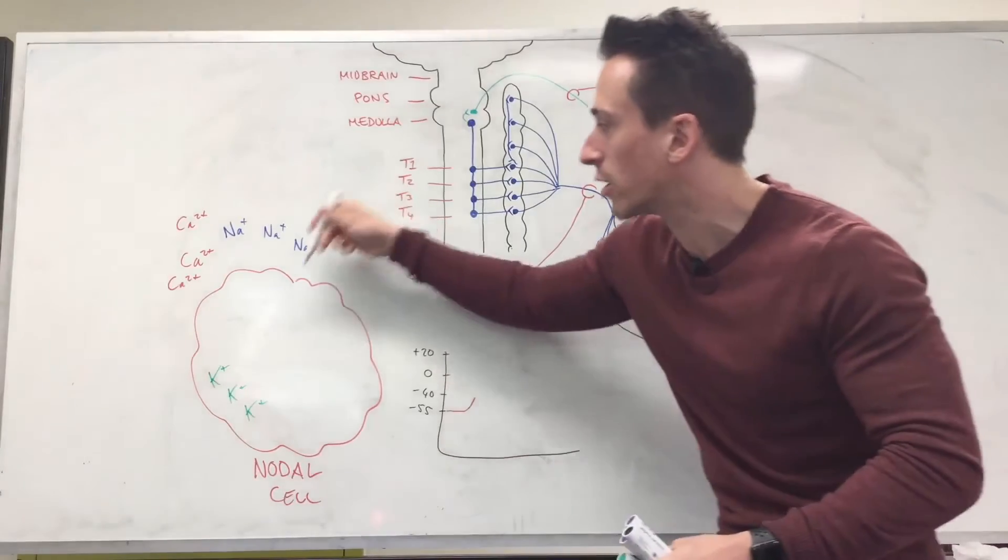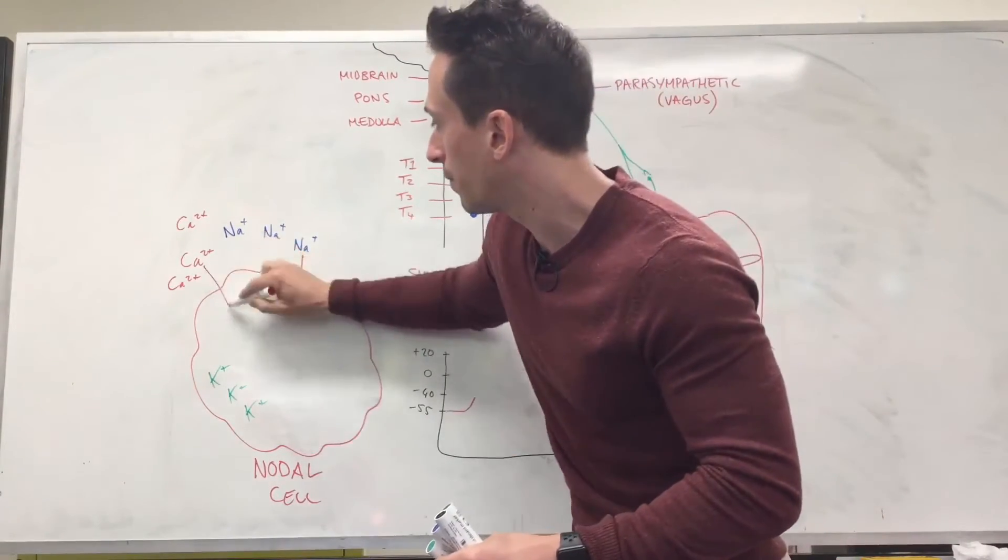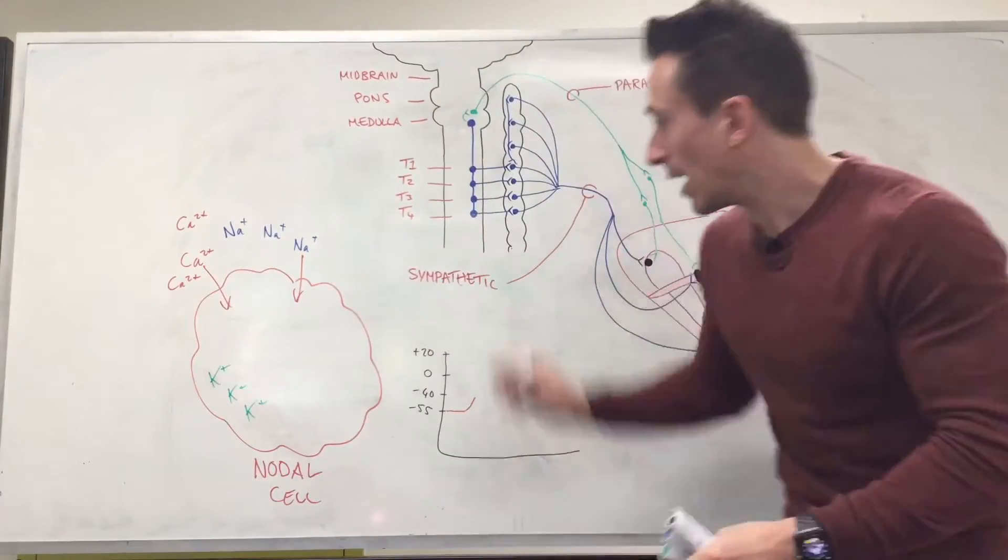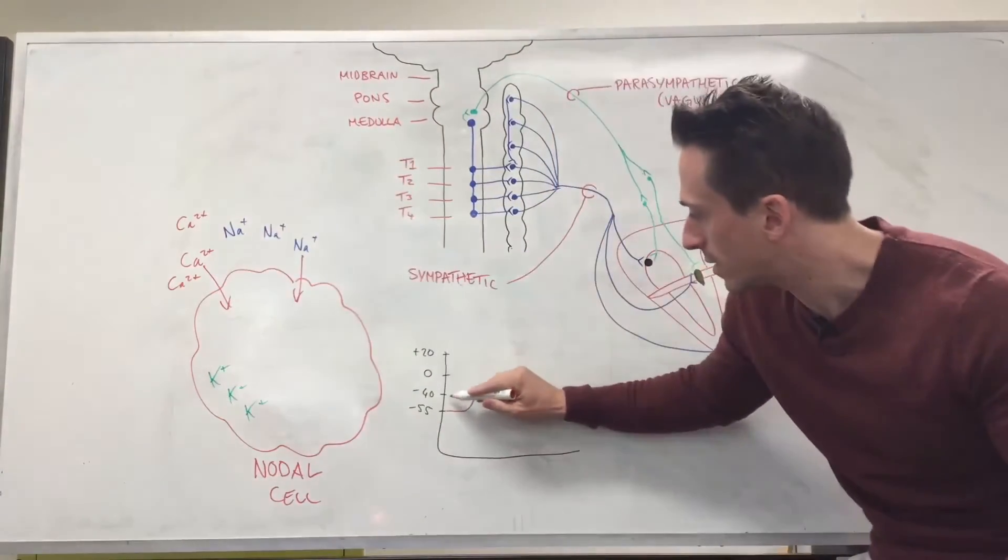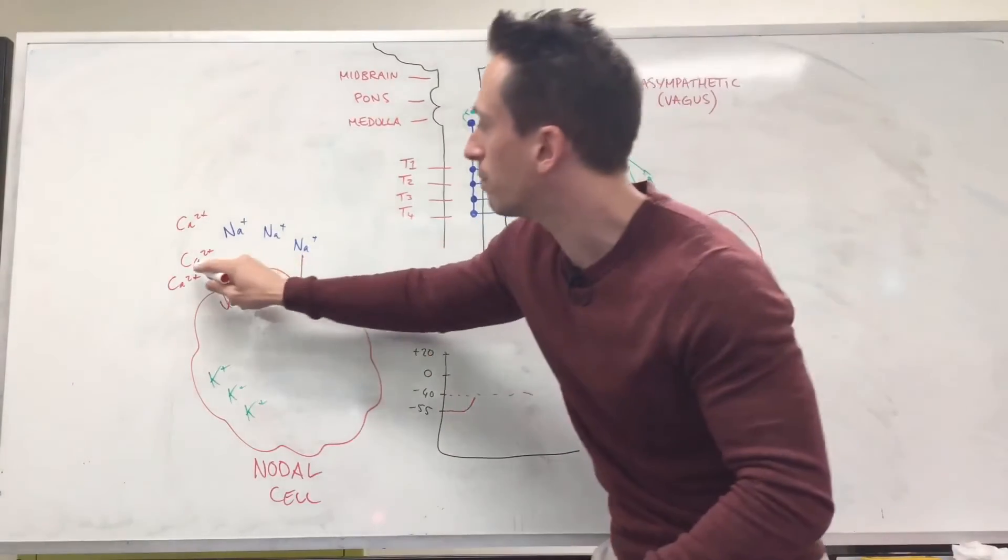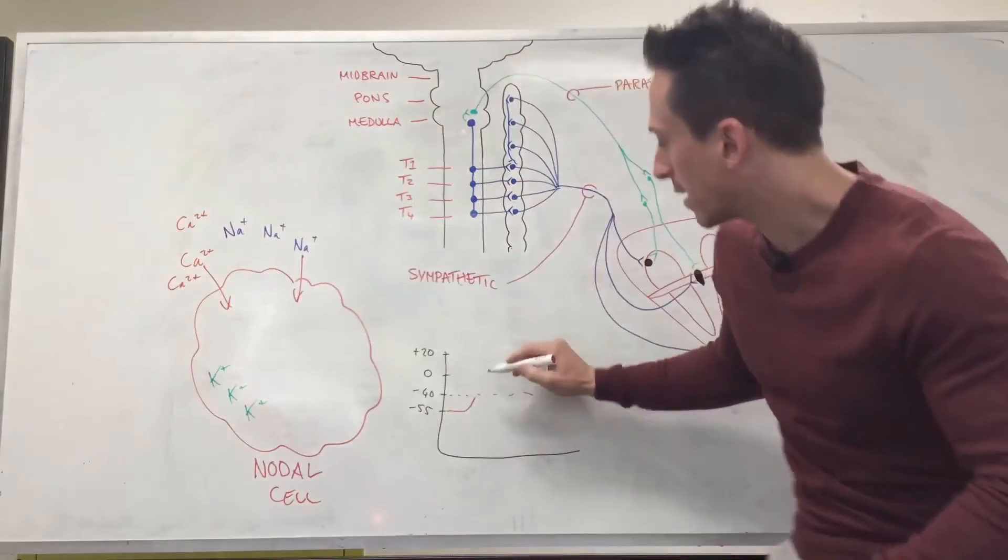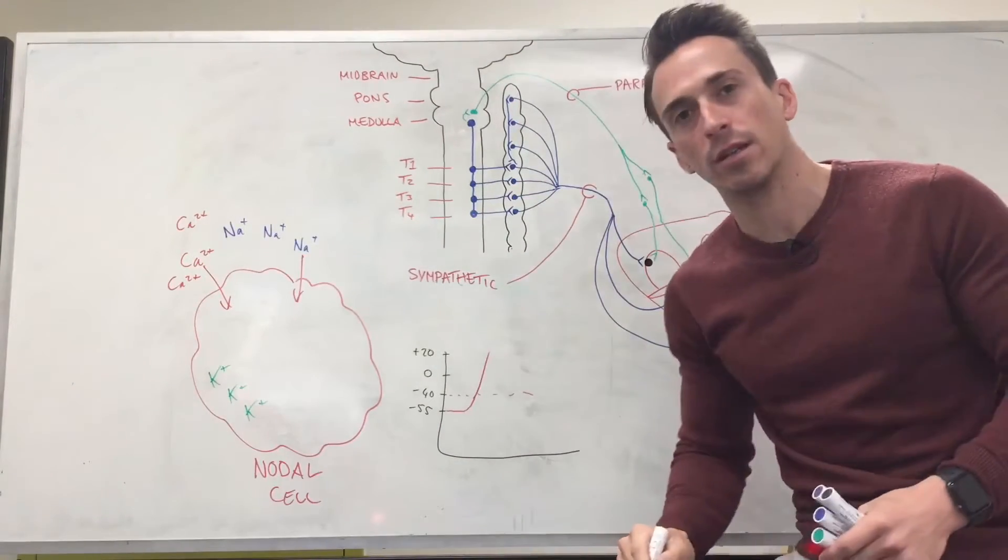To go from negative 55 to negative 40, positive things need to go into the cell. What are the positive things? Sodium and calcium. If enough sodium and calcium go in, it hits negative 40—we've hit the threshold. That opens up a whole bunch of more calcium channels and huge amounts of calcium shoot in, making it really positive inside the cell.